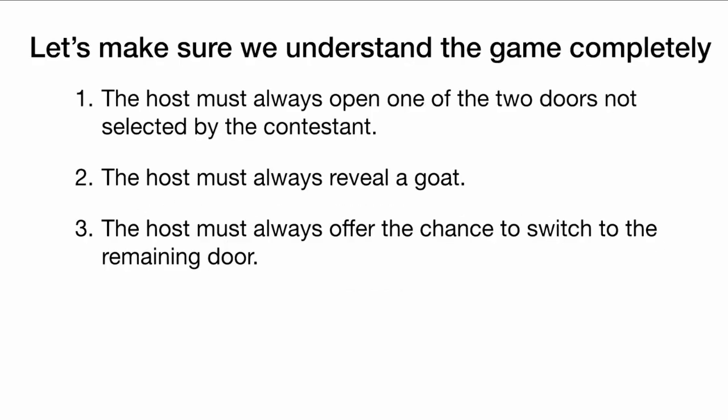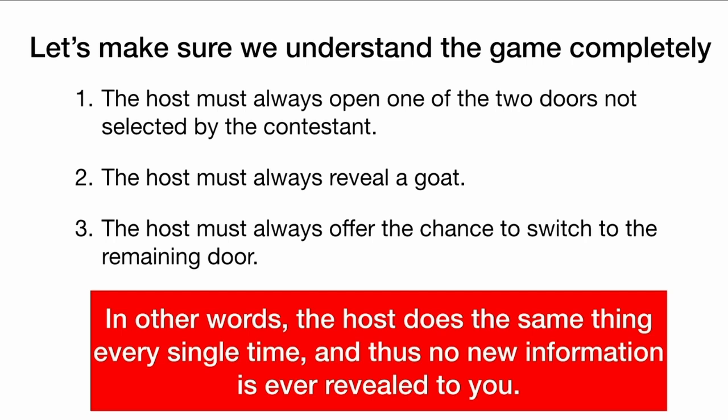So let's make sure we understand the game completely. After you choose a door, the host must always open one of the two remaining doors not selected by the contestant. The host must always reveal a goat behind that door, and must always offer the chance to switch to the remaining door. In other words, the host does the same thing every single time — he will reveal a goat behind one of the doors you did not choose. And thus, no new information is actually ever revealed to you.